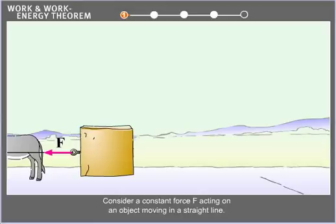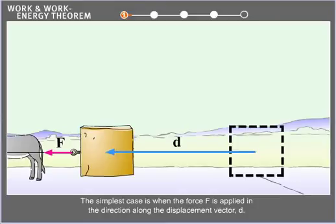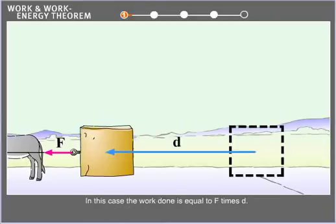Consider a constant force F acting on an object moving in a straight line. The simplest case is when the force F is applied in the direction along the displacement vector D. In this case, the work done is equal to F times D. Work W equals force F times displacement D.